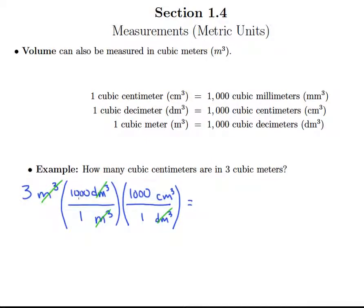Well, that's a total of 6 zeros. So I'm really just taking 3 and adding on 1, 2, 3, 4, 5, 6 zeros. So 3 cubic meters is the same as 3,000,000 cubic centimeters.